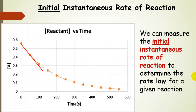We are going to use a particular instantaneous rate of reaction — a very special one — and that is the initial instantaneous rate of reaction. That occurs at the very beginning of the reaction where the reactant concentration is the highest, so basically this is the fastest the reaction is ever going to go. We can take measurements of this initial instantaneous rate and use them to determine a rate law for a given reaction, by changing the concentration of reactants, measuring the instantaneous initial rate, and deriving a rate law.